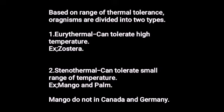Based on the range of thermal tolerance, organisms are divided into two types: eurythermal and stenothermal. Eurythermal means organisms that can tolerate a wide range of temperatures. Stenothermal organisms can tolerate only a small range of temperatures. For example, mango and palm trees cannot grow in Canada and Germany because those are cold-temperature countries.